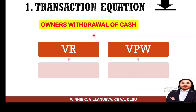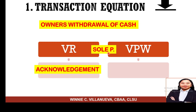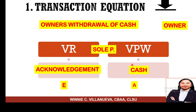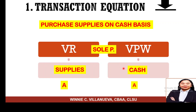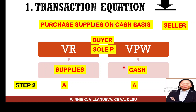What if the owner wants to withdraw? Who is involved? Still the sole proprietorship — the business. What does the business receive from the owner? An acknowledgement — a thank you — that the owner's equity will be reduced because of the withdrawal. The owner takes cash for personal use, so cash goes out, reducing the asset. The relationship here is between the business and the owner. Next: buying supplies on a cash basis. The business receives supplies and gives out cash — both are assets.